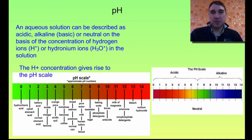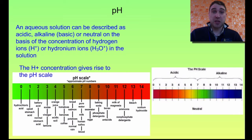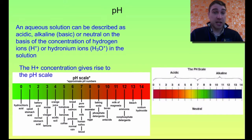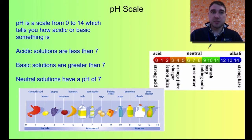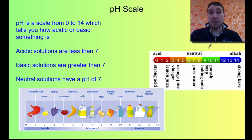What is pH? If we look at solutions, we can see if they are acidic, if they are neutral, or if they are basic. One way of doing that is measuring how many hydrogen ions are present in the solution, or how many hydronium ions are present. That gives rise to the pH scale — a scale that goes from 0 to 14. Acids have a pH less than 7, bases have a pH greater than 7, and neutral solutions have a pH of exactly 7.